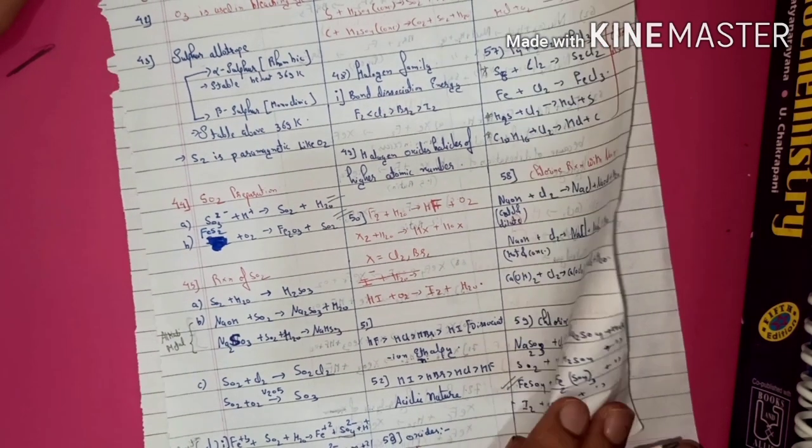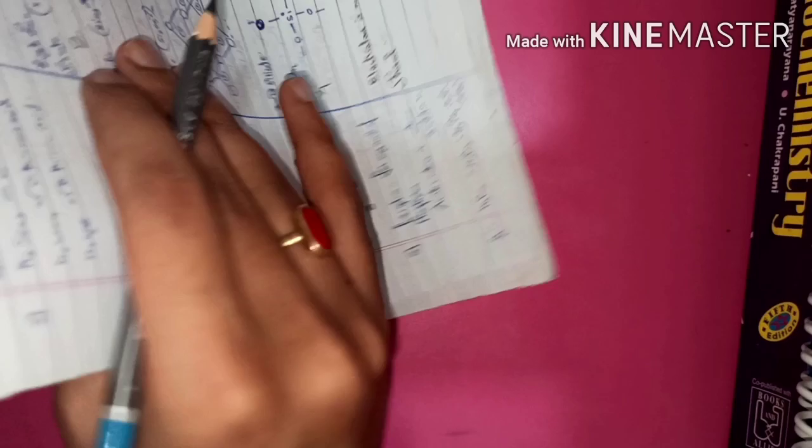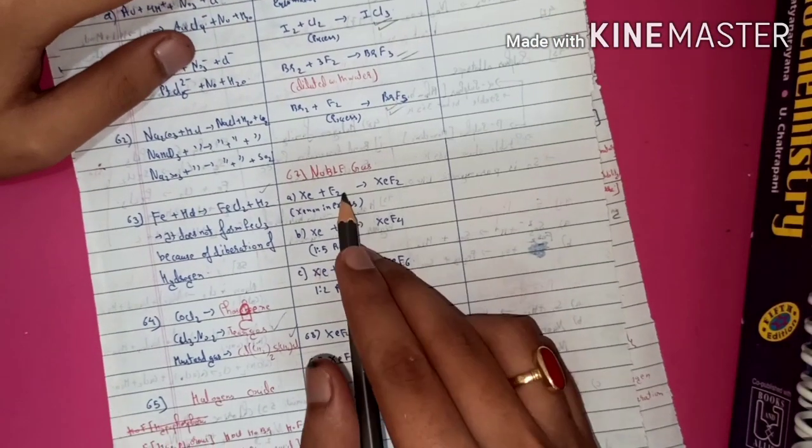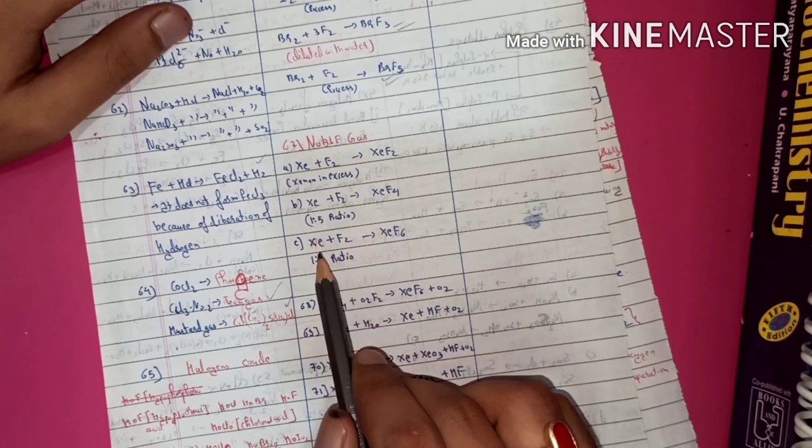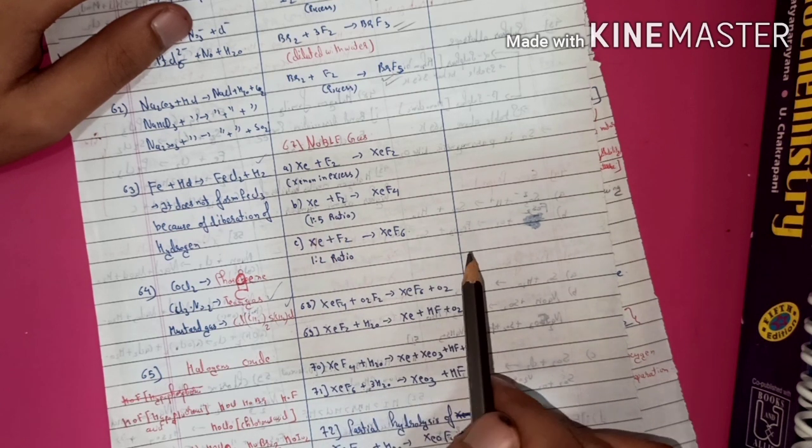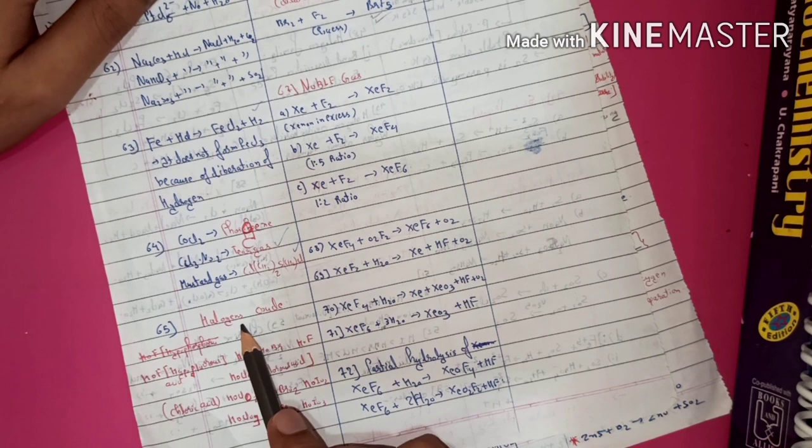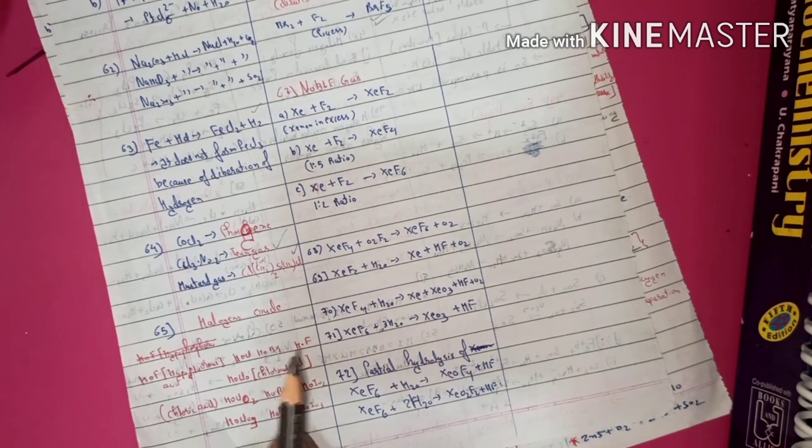Preparation of SO2 and the trends of acidic nature and dissociation enthalpy of halogen group and different oxides of halogen group. Reactions of the noble gas, reaction of xenon with fluorine, reaction of xenon with fluorine in a ratio of 1 is to 5, halogen oxides which are very much important.